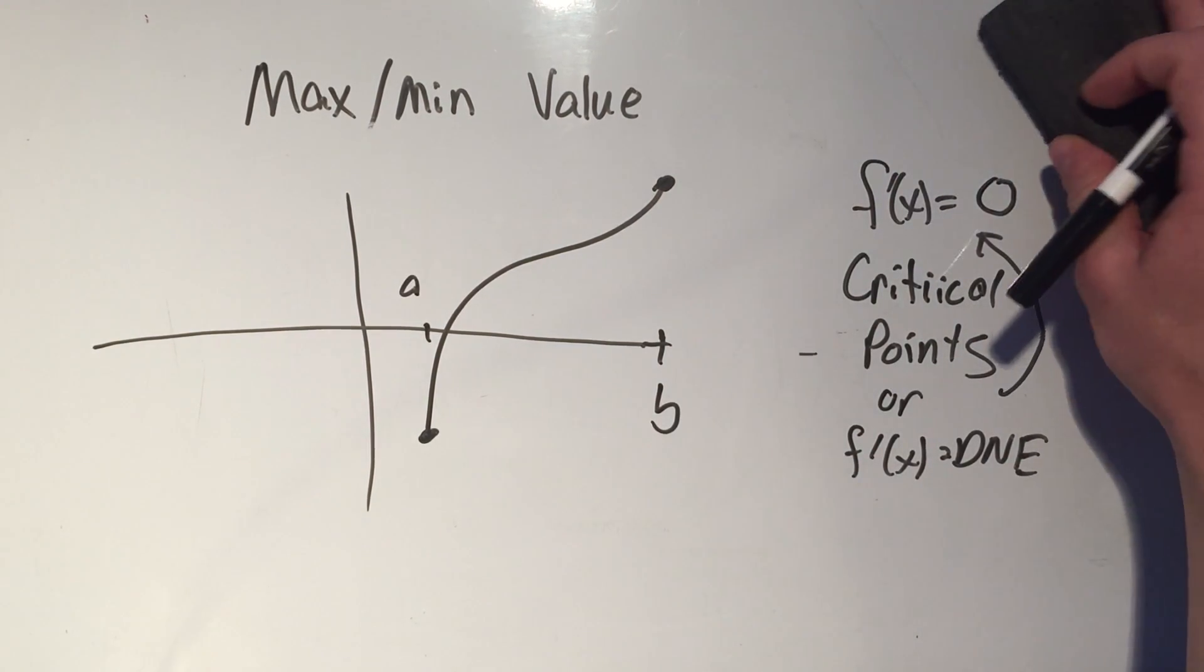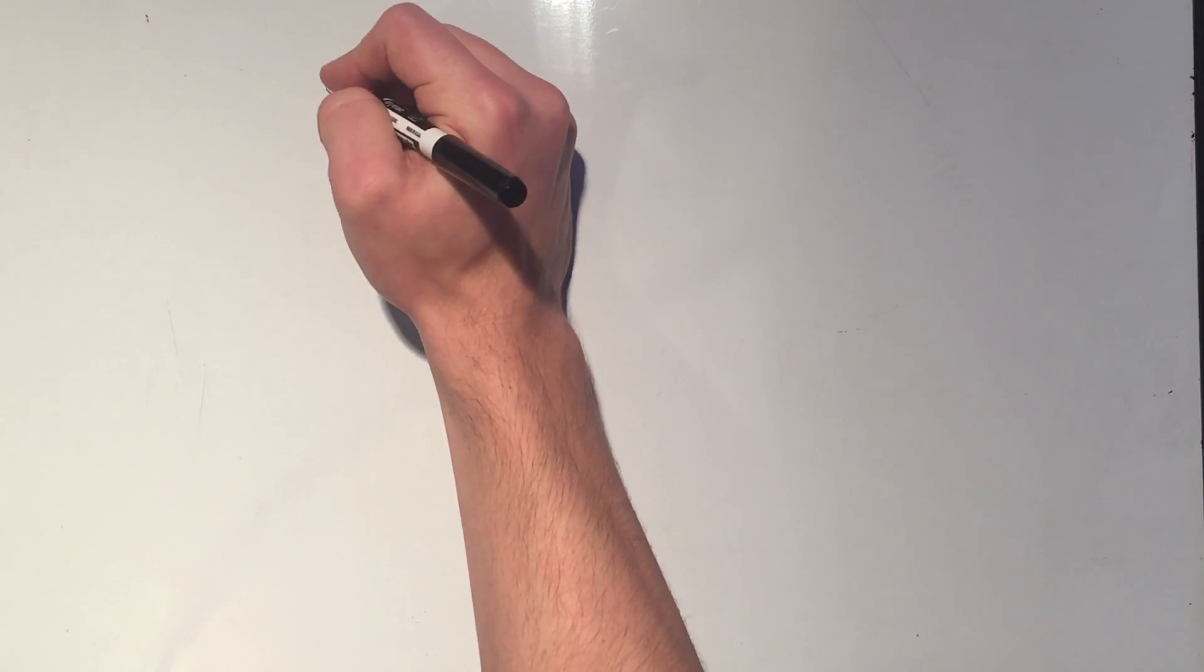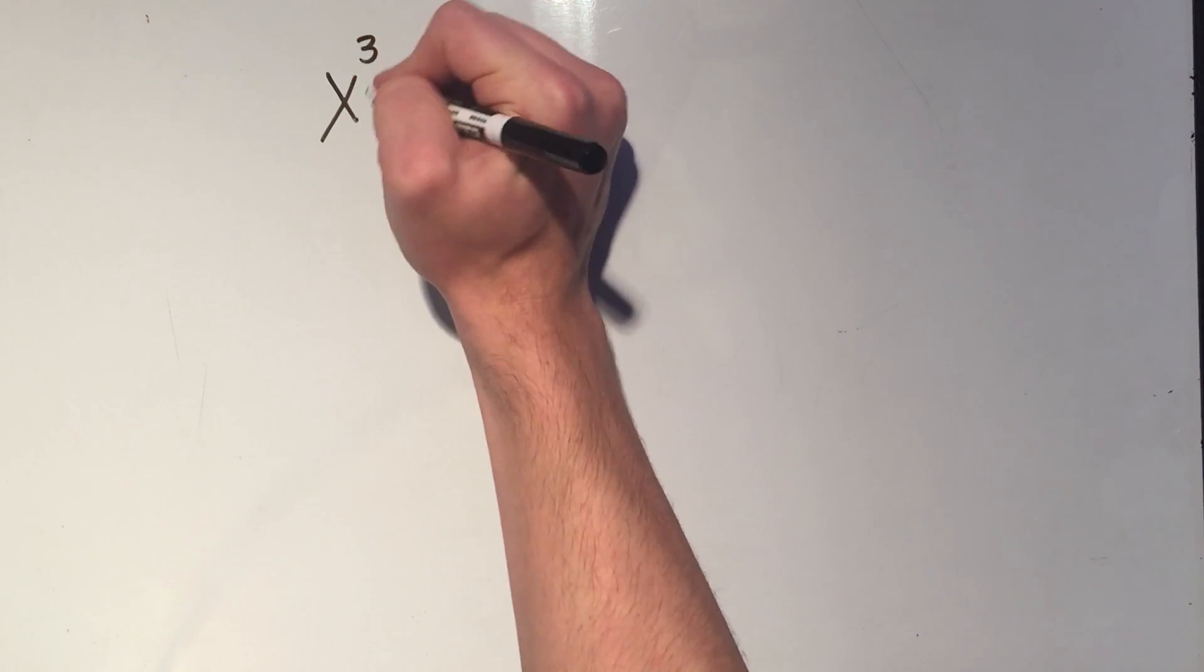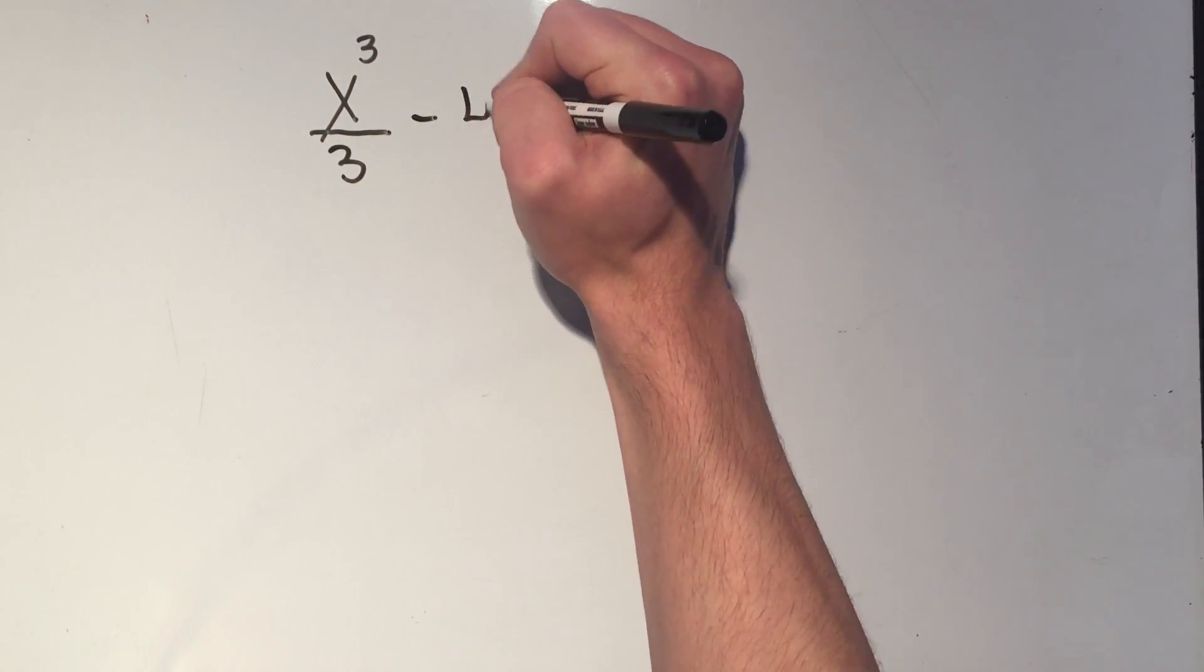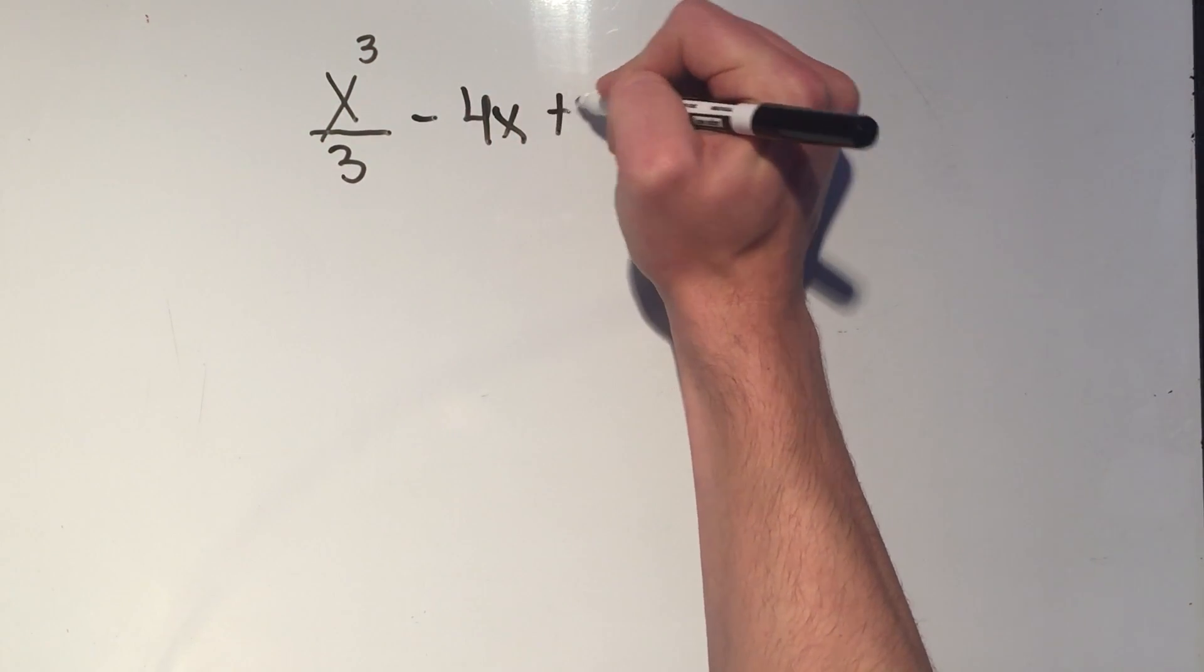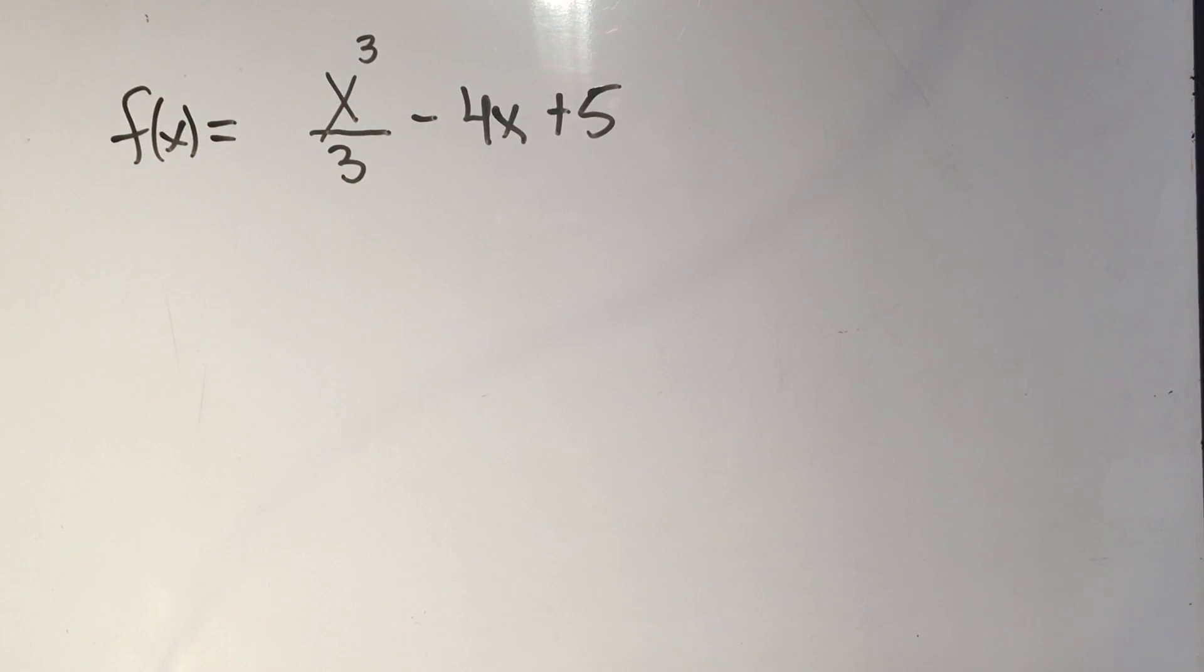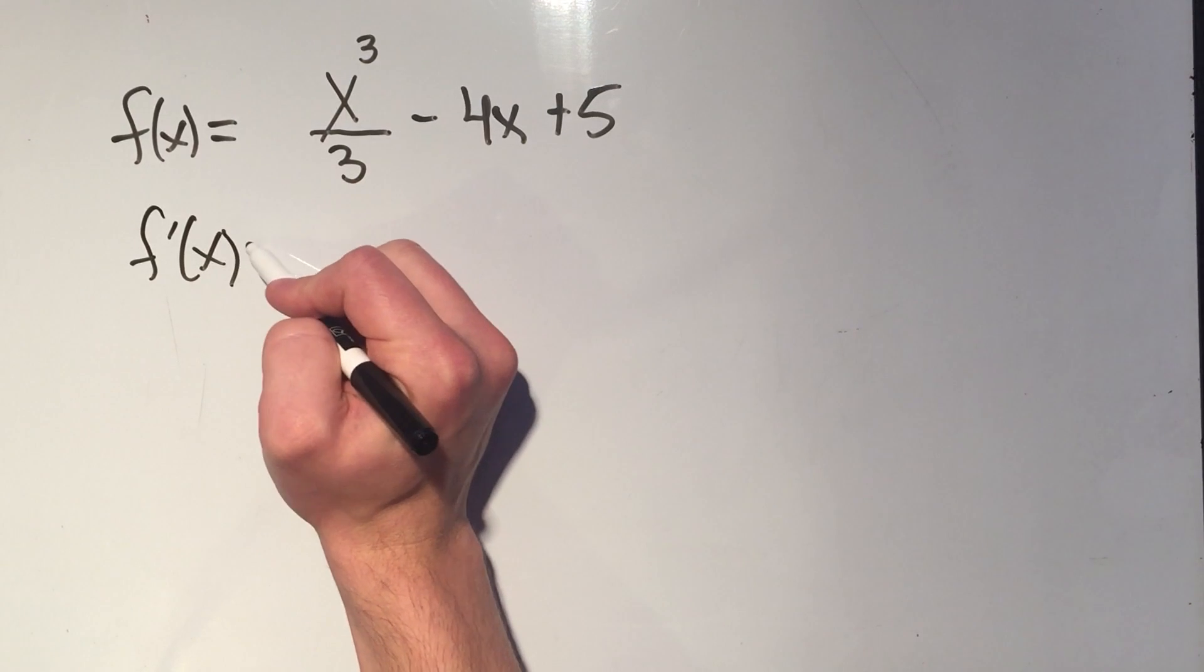Let's do an example. Okay. Let's find an example. So what I'm going to do is I want to find all the maximum and minimum values of, and I'm kind of just making this up. This is my function. I want to find all of the maximum and minimum values of this function. And we know to do that, we need the first derivative.